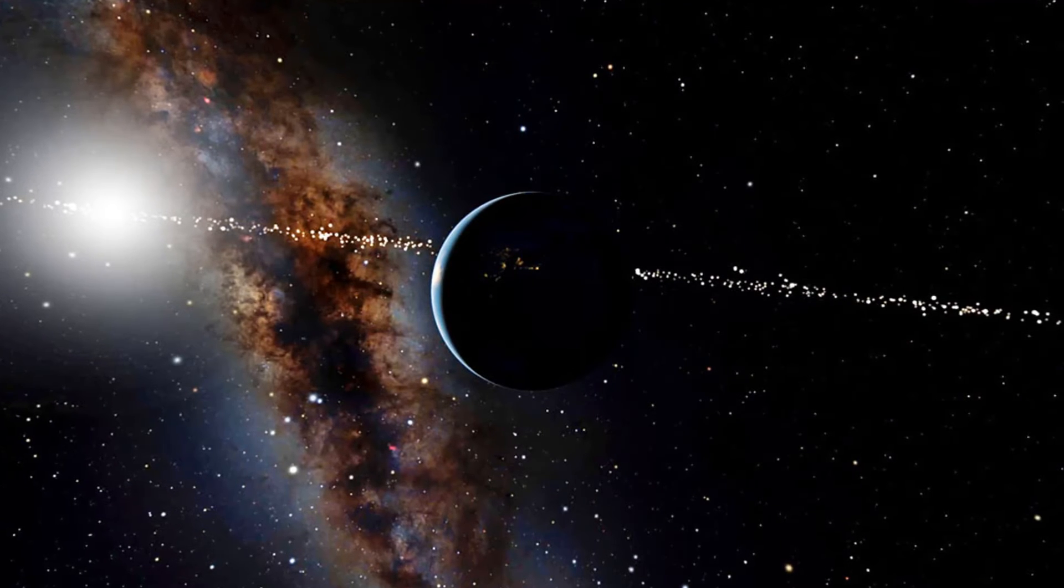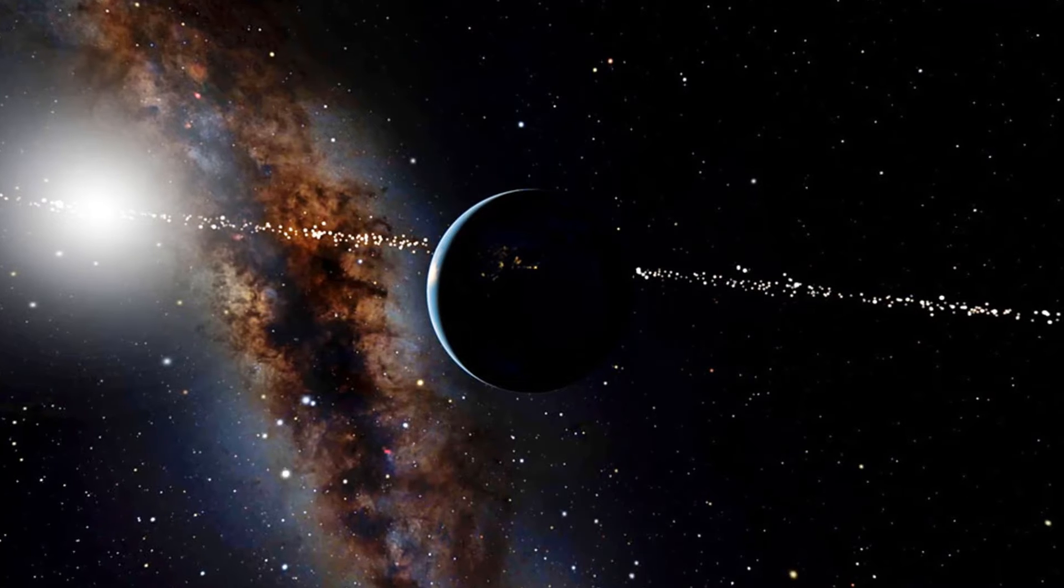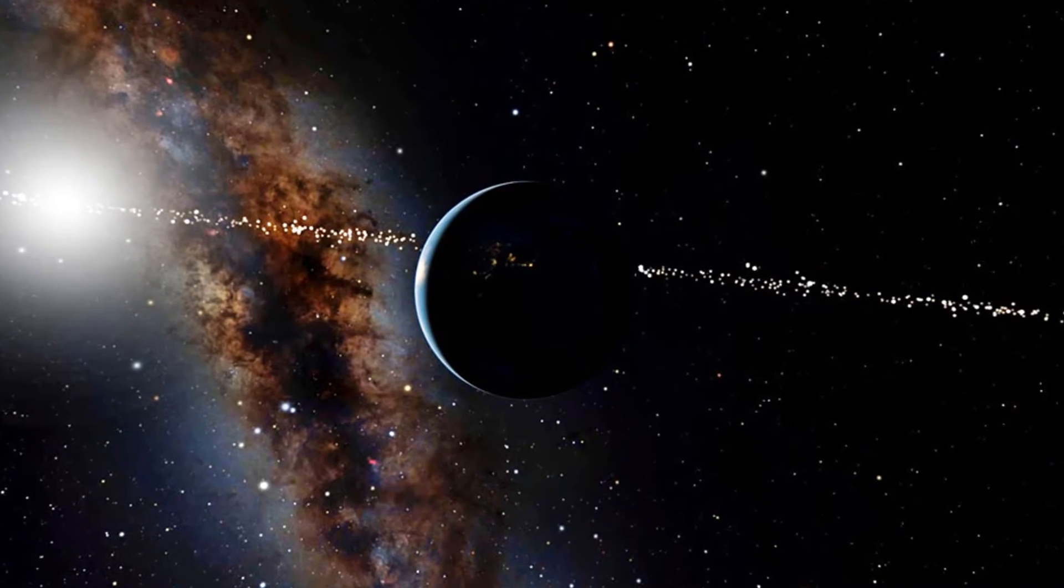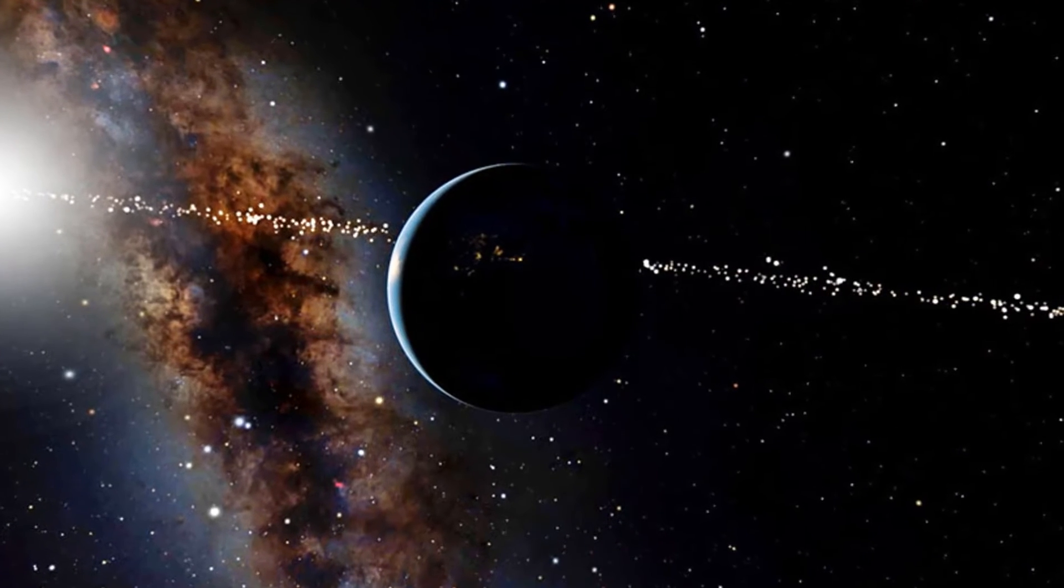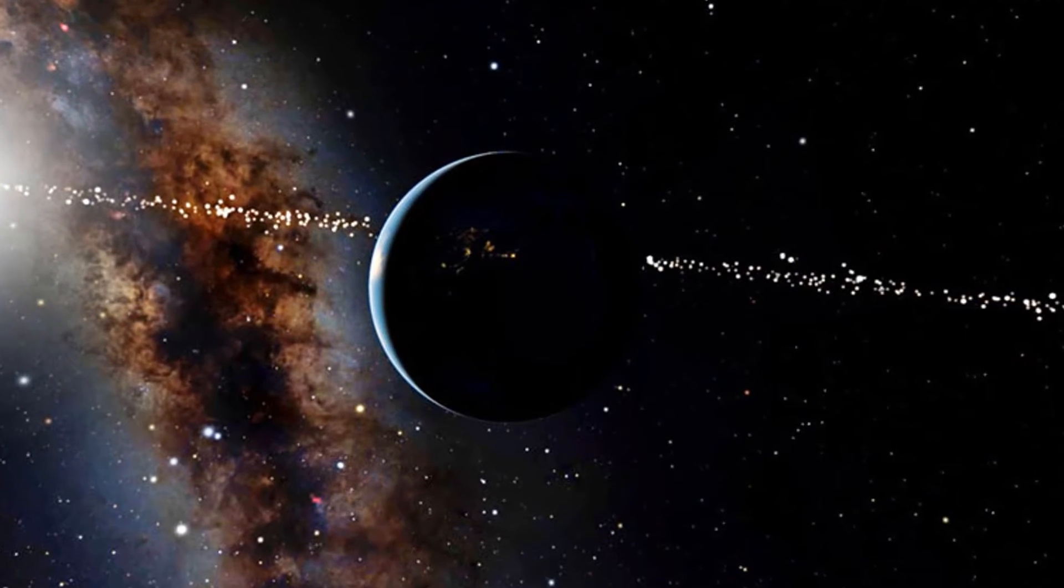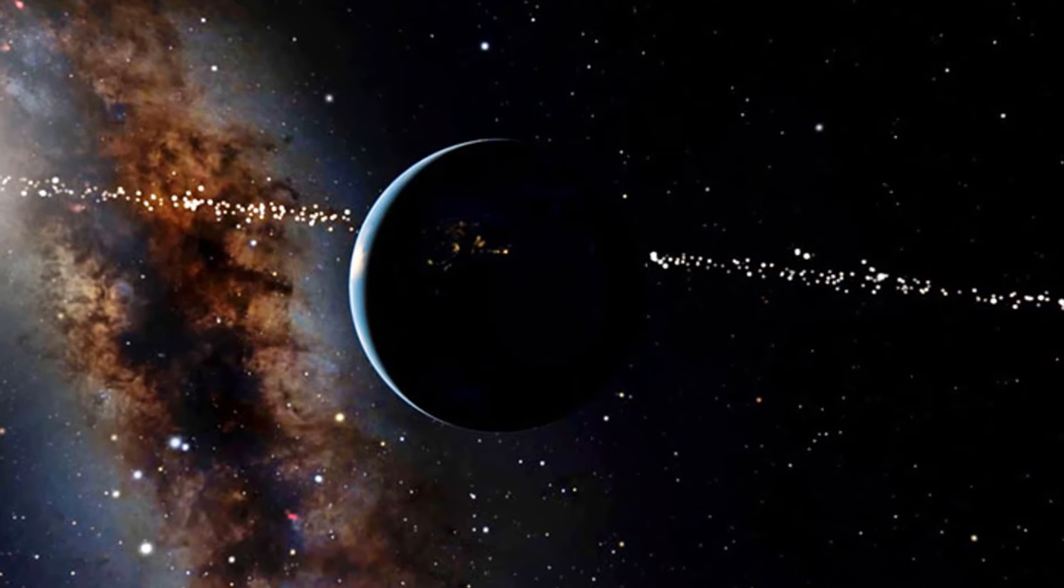Those 2,034 stars had or will have the front row seat to finding Earth as a transiting planet, says Faherty of the American Museum of Natural History in New York City.